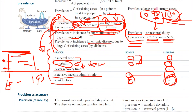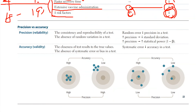Being able to quickly understand which situations affect incidence and prevalence — and how — is the key to understanding these concepts. Incidence means new cases; prevalence means all existing cases. Now let's talk about precision, otherwise known as reliability, and accuracy, otherwise known as validity. It's very important that you differentiate both.